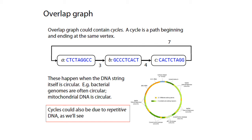Cycles are kind of interesting because they can happen for a number of reasons. Number one is that they can happen when your genome is circular. Bacterial genomes can be circular, as well as mitochondrial DNA. So if you do a lot of sequencing of these circular bacterial genomes and draw overlap graphs, you'll see a cycle because there literally is circular DNA in the genome. The other common reason why cycles happen is because of repetitive sequences. In short, overlap graphs allow you to see cycles and therefore tell you about where potential repetitive sequences are.